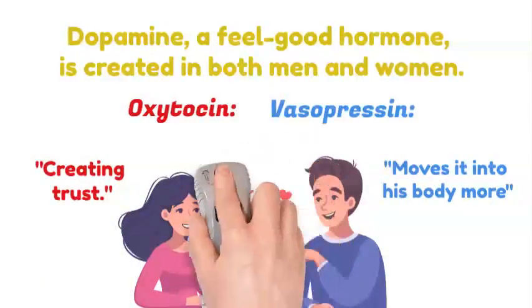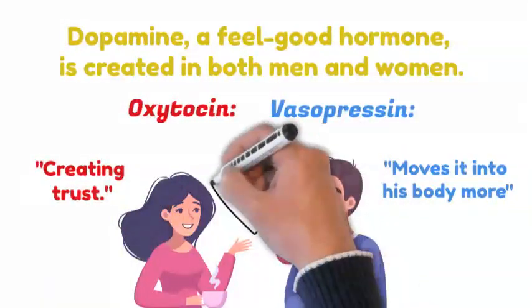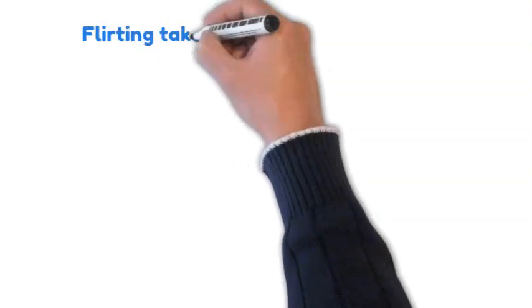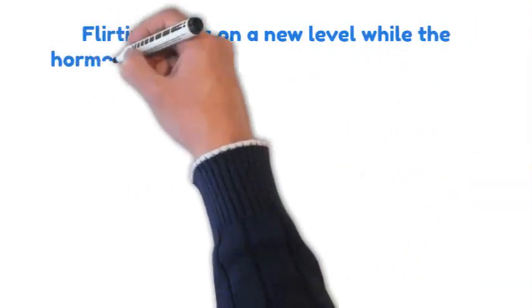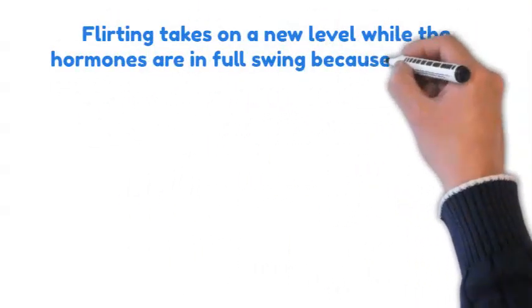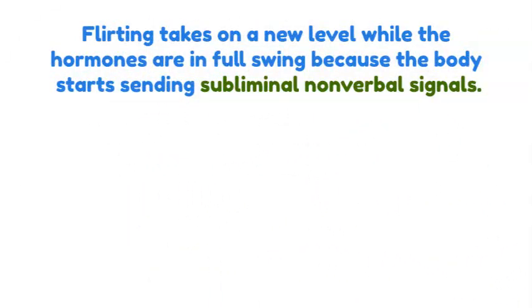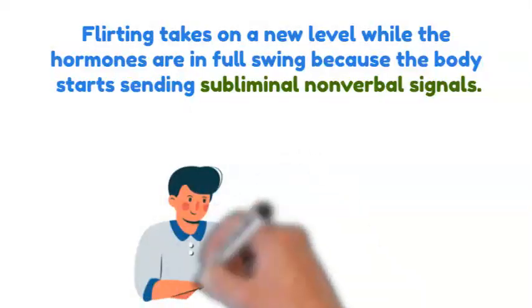These hormones let the initial physical attraction develop into something more meaningful. Now the visible effects. Flirting takes on a new level while the hormones are in full swing because the body starts to send subliminal non-verbal signals. Eye contact is a significant one.